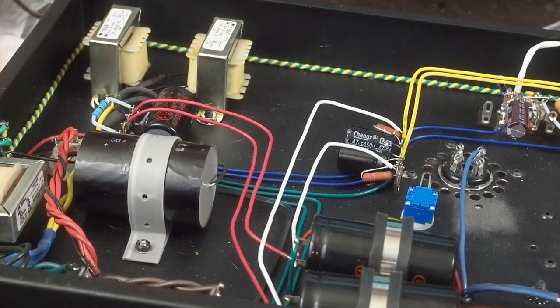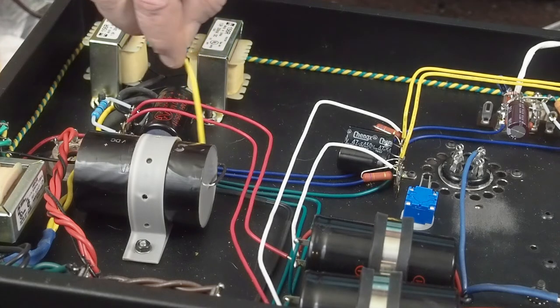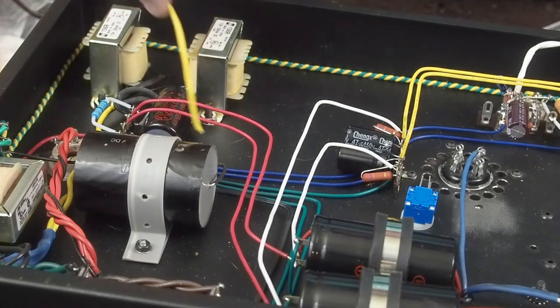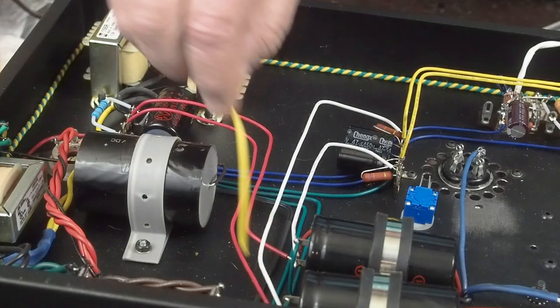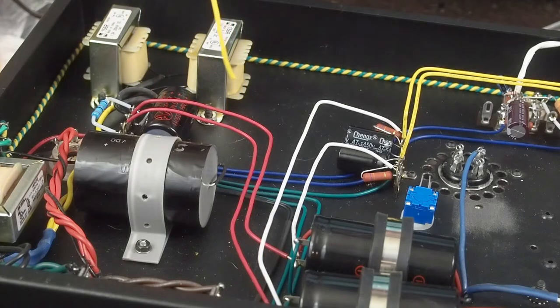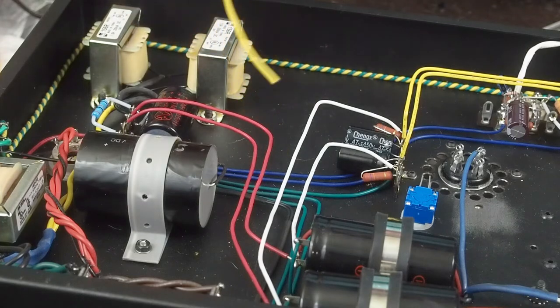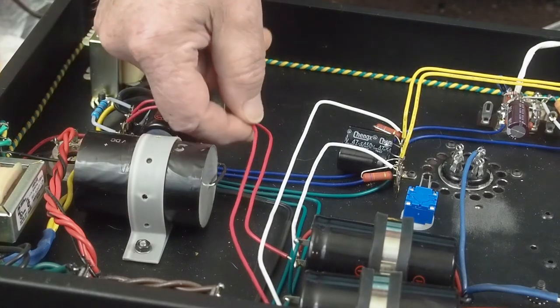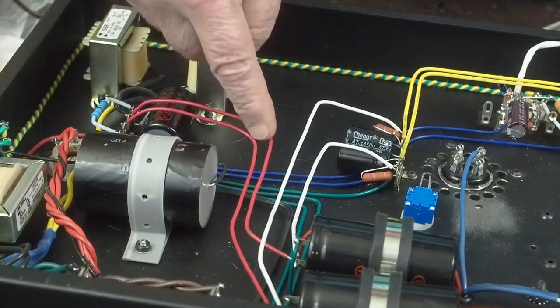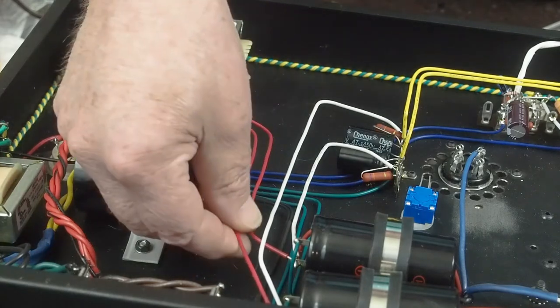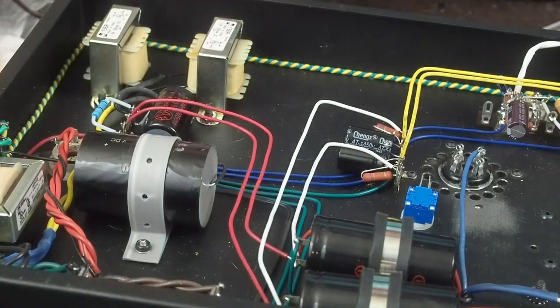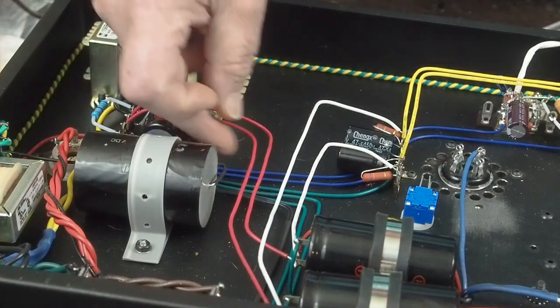The other thing that you can see at this angle is I've taken advantage of being able to use this solid 18 gauge copper wire to take advantage of the three-dimensional space inside the amplifier. And you can space the wires apart from each other and then have these up in the air.